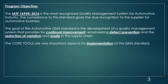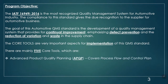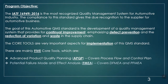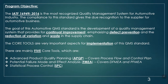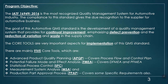The core tools are very important aspects for implementation of this QMS standard. There are mainly five core tools: advanced product quality planning (APQP), which covers process flow and control plan; potential failure mode and effect analysis (FMEA), covering design FMEA and process FMEA; statistical process control (SPC); measurement system analysis (MSA); and production part approval process (PPAP). PPAP also covers specific requirements for bulk material suppliers, tire industries, and truck industries, which differ slightly from the usual structure of FMEA, SPC, or MSA.